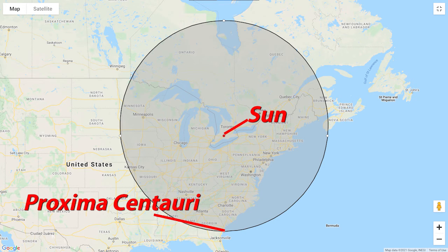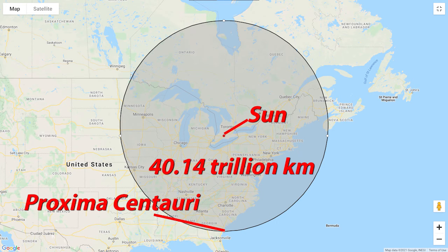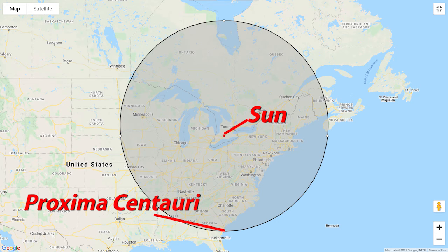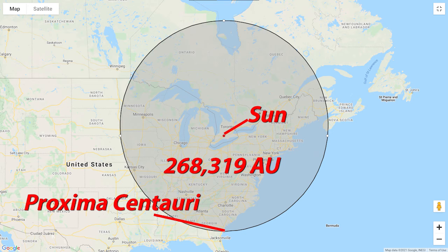But once we get out of our solar system, we're talking about even larger distances. What about the next closest star? The next closest star would be Proxima Centauri, and it is 40.14 trillion kilometers away — a huge, huge distance. Because it's so huge, even astronomical units aren't going to work, because that works out to be 268,319 astronomical units. That's a pretty big number, and that's just for the next closest one to us. What about the ones that are much, much farther away?